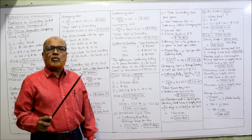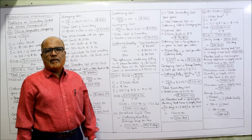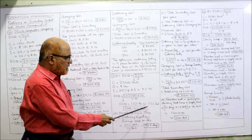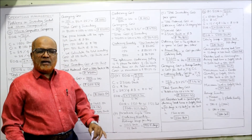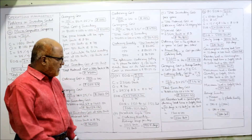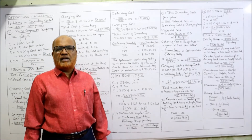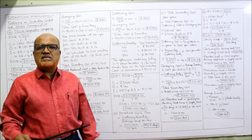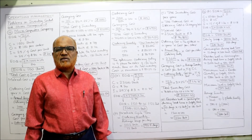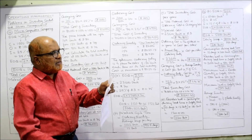Purchase cycle time = ordering quantity ÷ usage per day = 1,122 ÷ 12 = 93.5 days. So every approximately 93 days, the company has to make purchases.